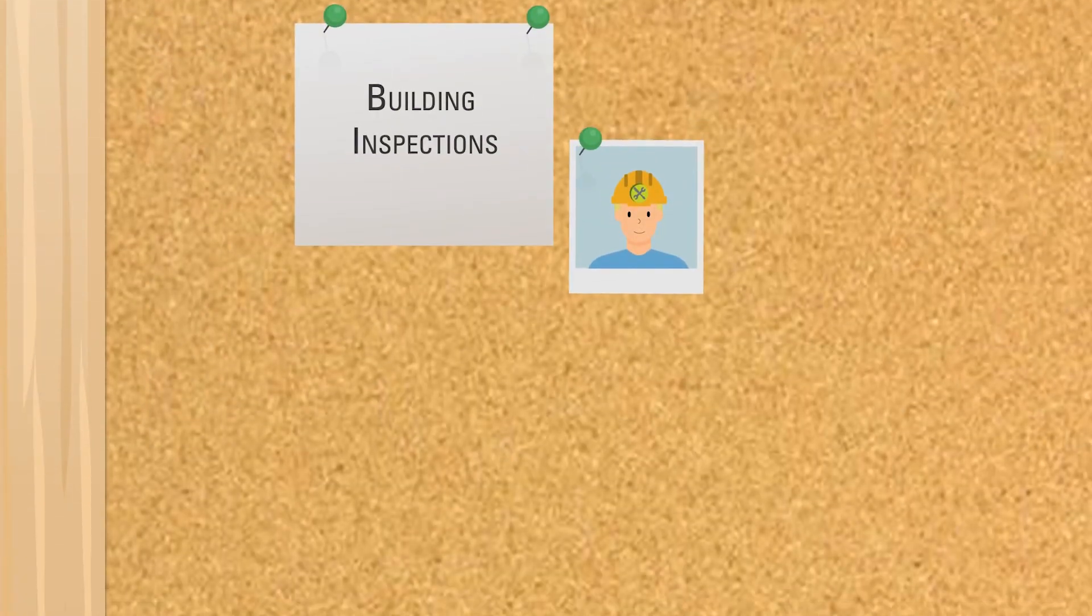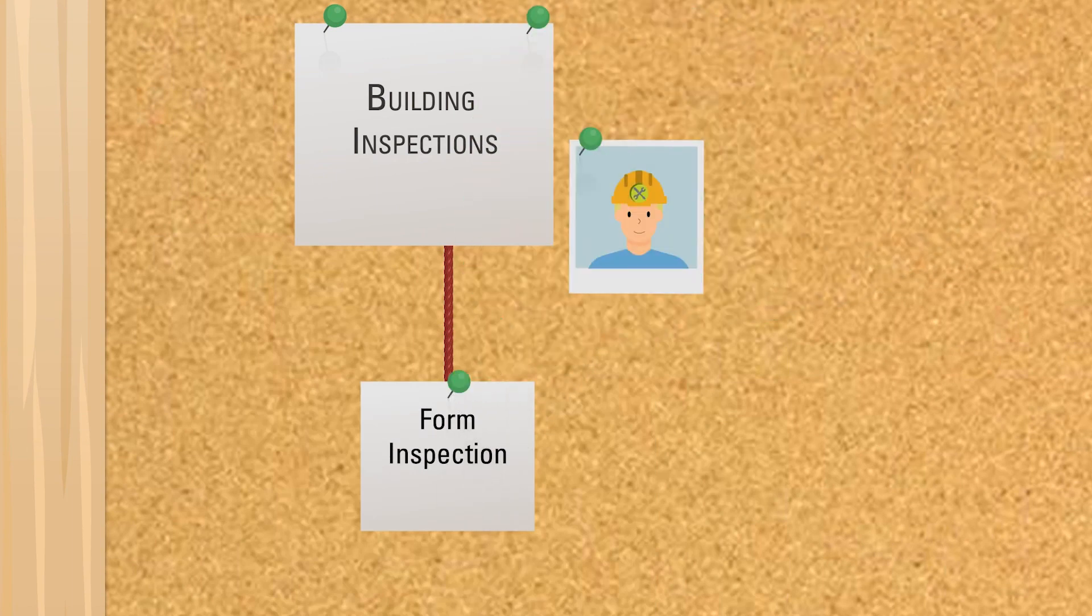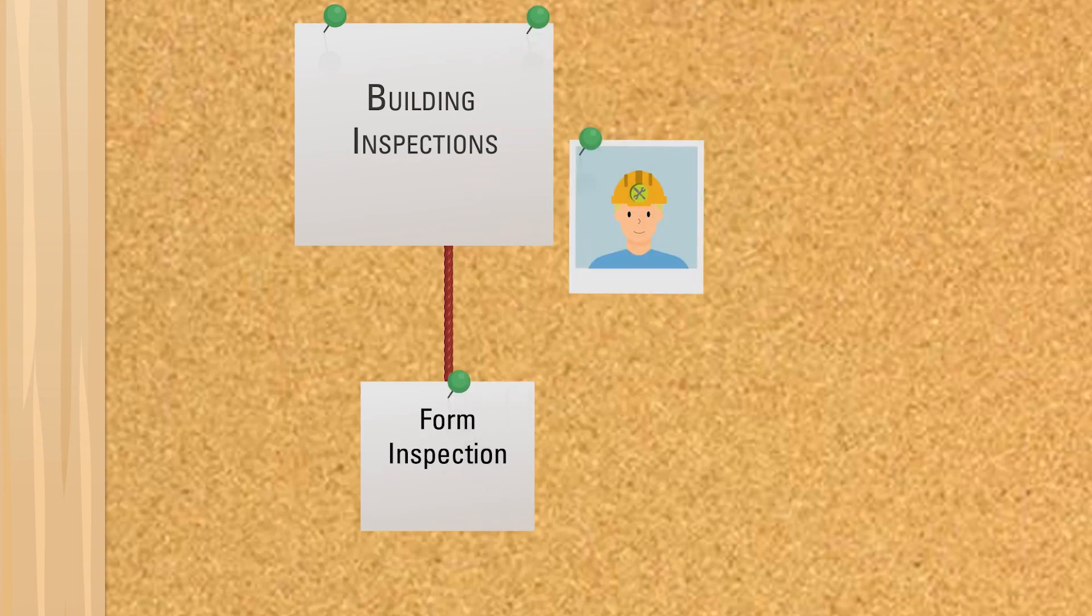Here is an overview of the inspections your team will need to book. Building inspections start with the form inspection. Here, the inspector will examine the foundation and any footings that will support your home.